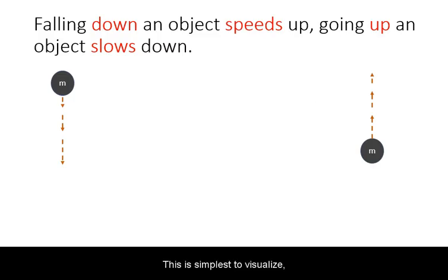This is simplest to visualize by dropping an object and seeing it speed up. Alternatively, if an object is thrown in the upward direction, we observe it slowing down.